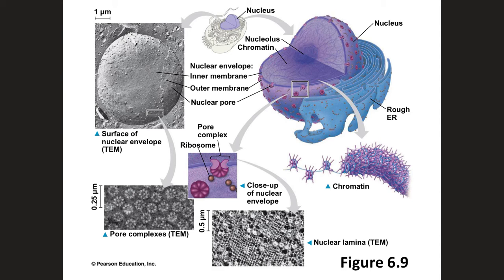The nucleus of the cell is information central. This organelle is the largest and most easily seen, usually in the center of the cell, though its location can vary. Within the nucleus, we find stored genetic material, or the DNA. Chromatin is the name given to DNA that is organized with proteins. They are stringy structures and condense to form chromosomes during cell division. The nucleus is surrounded by a nuclear envelope, which is also composed of a two-layer phospholipid bilayer, just like the cell membrane. The envelope has nuclear pores that allow proteins to move into the nucleus and RNA to move out to the cytoplasm.